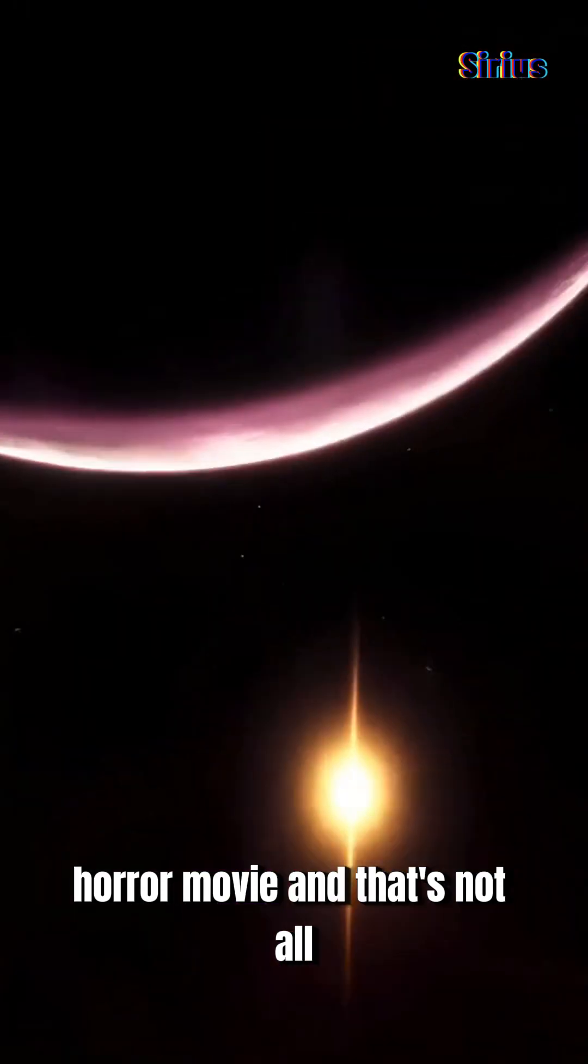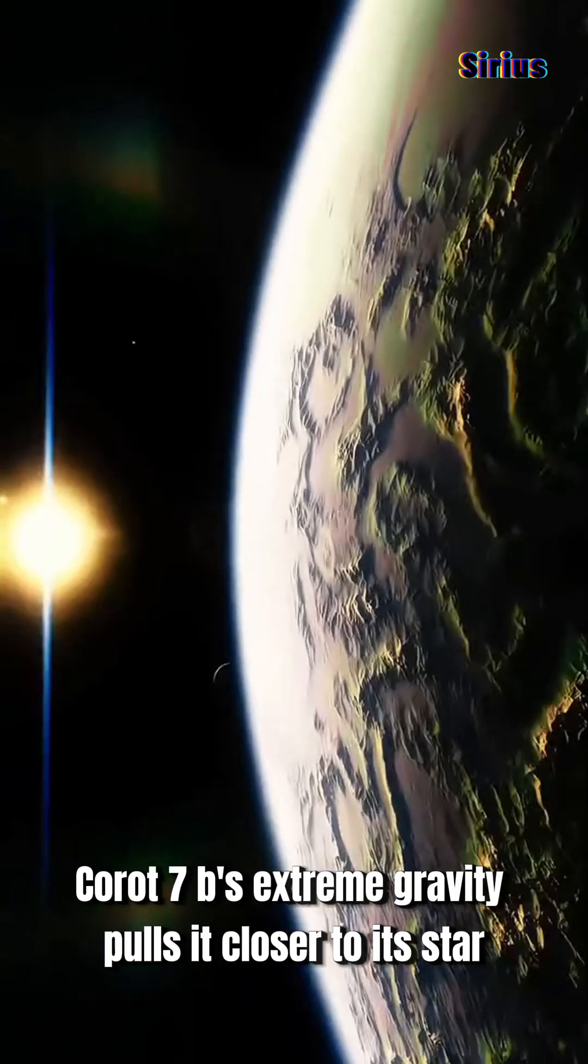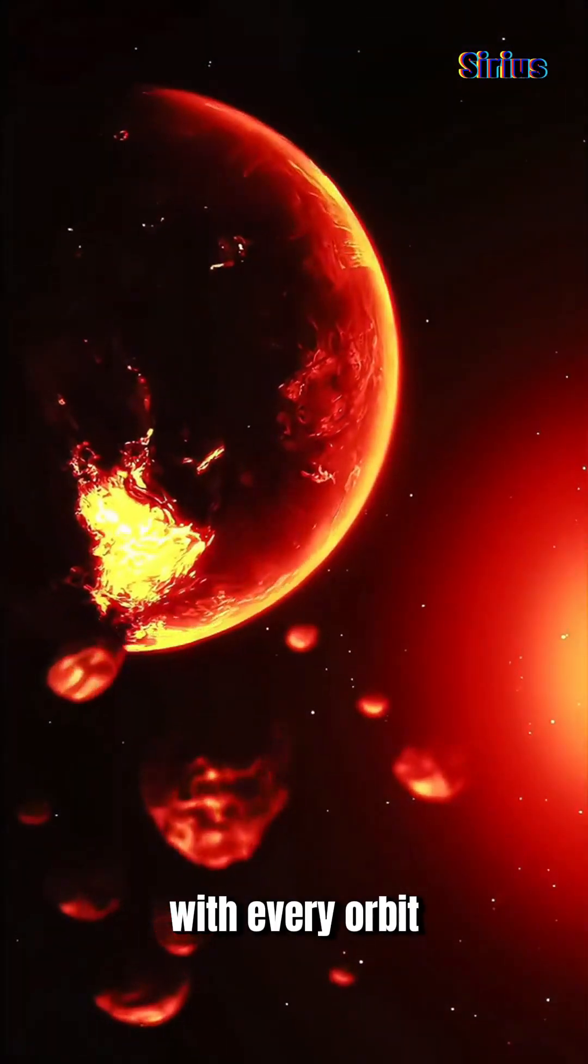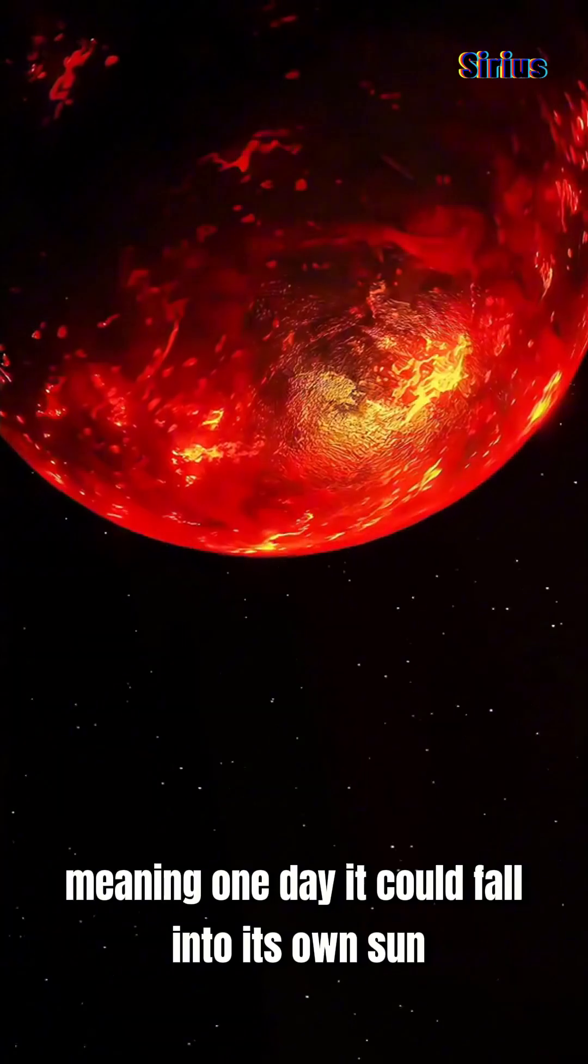And that's not all. Korat 7b's extreme gravity pulls it closer to its star with every orbit, meaning one day it could fall into its own sun.